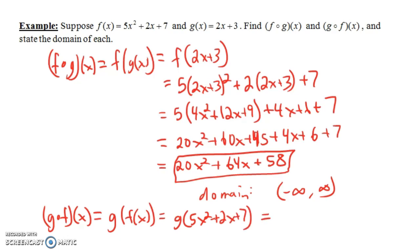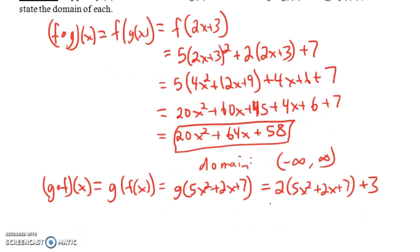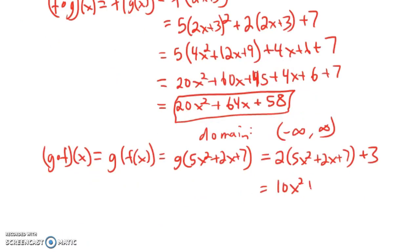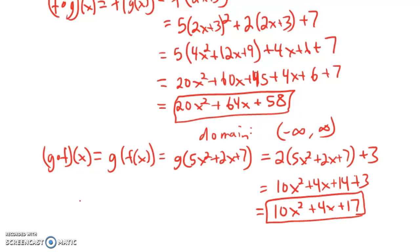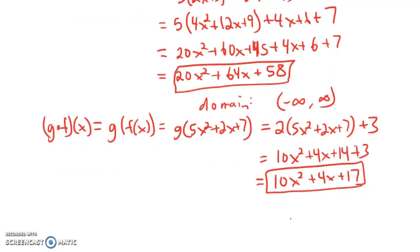G of x is 2x plus 3, so g of 5x squared plus 2x plus 7 is 2 times (5x squared plus 2x plus 7) plus 3. Distributing the 2 gives 10x squared plus 4x plus 14, plus 3. Combining constants gives 10x squared plus 4x plus 17. Again, the domain here is the set of all real numbers — the interval from negative infinity to infinity.